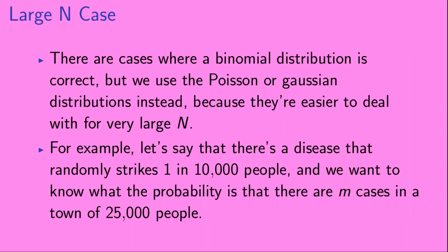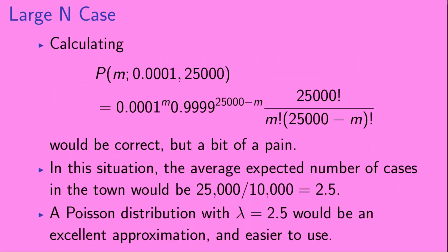There are also cases where a binomial distribution is correct, but we use the Poisson or Gaussian distributions instead because they're easier to deal with for very large values of n. For example, let's say there's a disease that randomly strikes 1 in 10,000 people, and we want to know the probability that there are m cases of the disease in a town of 25,000 people. Here, calculating the probability using the binomial distribution would be correct, but a bit of a pain. In this situation, the average expected number of cases in the town would be 2.5. A Poisson distribution with the parameter lambda set to 2.5 would be an excellent approximation and easier to use.